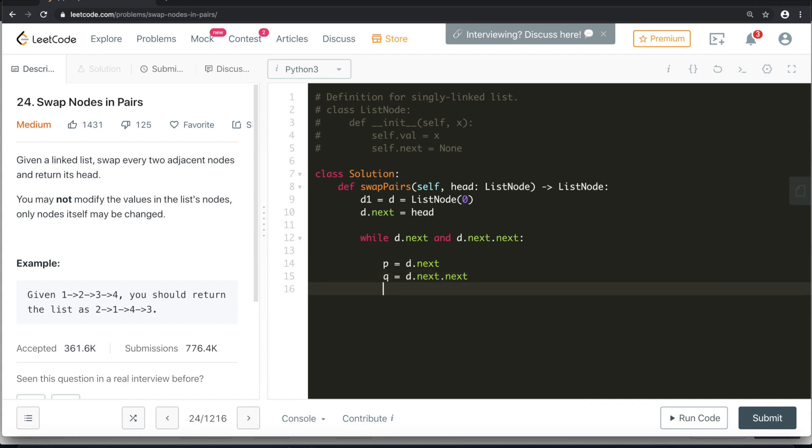And now come those three things to change the pointer: d.next, p.next, and q.next. So we need to change these three pointers: d.next, p.next, and q.next to q, q.next, and p respectively. d.next to q, p.next to q.next, and q.next to p.